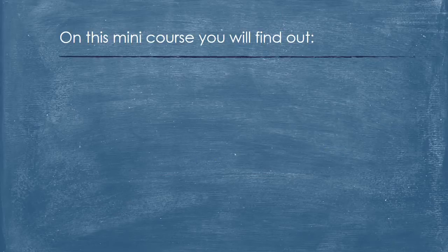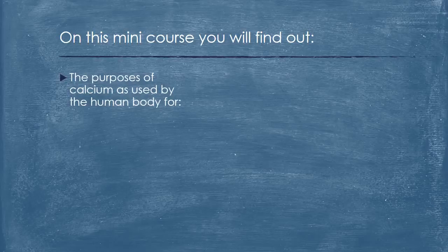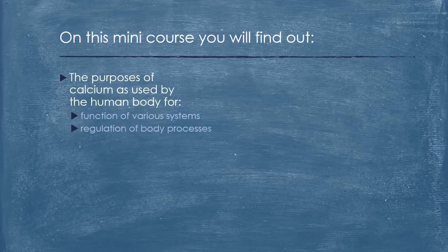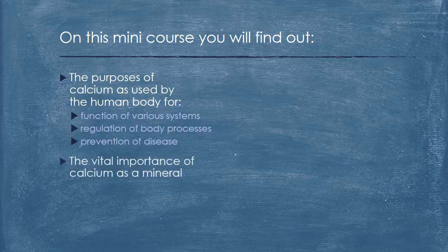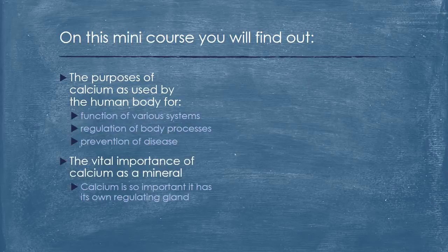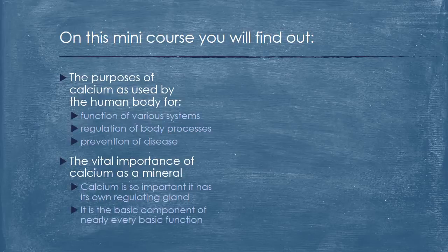Now let's look at an overview of what you'll learn in this mini-course. First, we'll look at the purposes of calcium as used by the human body for function of various systems, regulation of body processes, and prevention of disease. Following, we'll look at the vital importance of calcium as a mineral, how calcium is so important it has its own regulating gland, and how it's the basic component of nearly every basic bodily function.